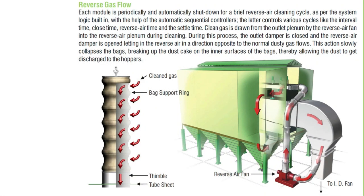Reverse Gas Flow: Each module is periodically and automatically shut down for a brief reverse air cleaning cycle as per the system logic. With the help of automatic sequential controllers, various cycles are controlled — including interval time, close time, reverse air time, and settle time. Clean gas is drawn from the outlet plenum by the reverse air fan into the reverse air plenum during cleaning. During this process, the outlet damper is closed and the reverse air damper is opened, letting in reverse air in a direction opposite to the normal dust gas flow.